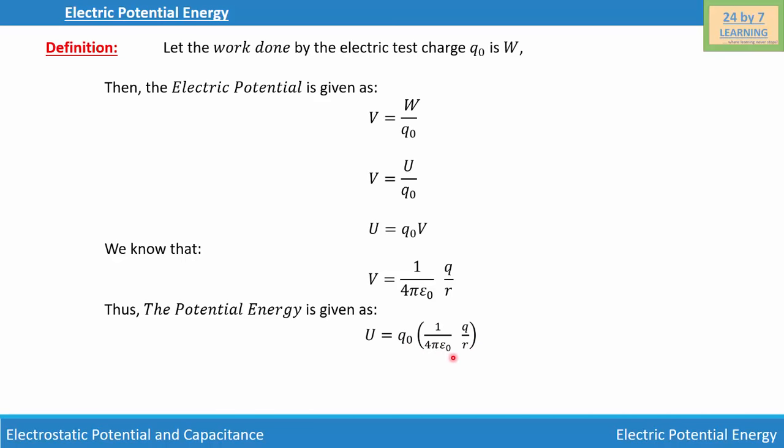Simplifying further, we write U = (1/4πε₀)(QQ₀/R). This is how we define electric potential energy.